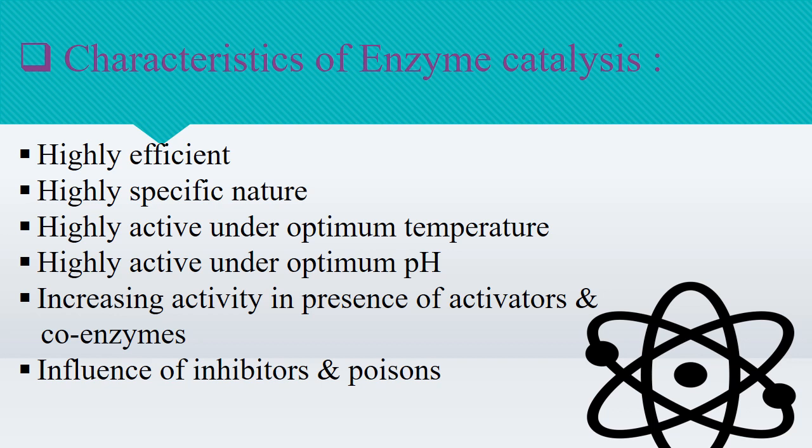Enzymes are highly active under the optimum temperature. The rate of an enzyme reaction becomes maximum at a definite temperature, called the optimum temperature. On either side of the optimum temperature, the enzyme activity decreases. The optimum temperature range for enzymatic activity is 298 to 310 Kelvin. Human body temperature being 310 Kelvin is suited for enzyme-catalyzed reactions; therefore, in our body, bio-enzymatic reactions take place for digestion of food and other processes.